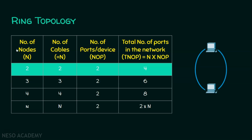I have created a table where the number of nodes are listed, how many cables are required, the number of ports per device, and the number of ports in the network. If n is the number of nodes, if there are two nodes, we need two cables — that is why I have used n in both cases. The number of nodes is equal to the number of cables in ring topology; this will not be the case for all topologies. Each node must have two ports, giving a total of four ports when there are two nodes.